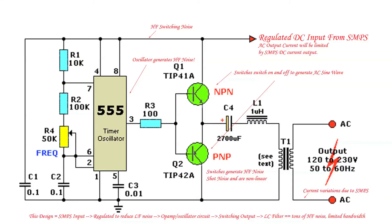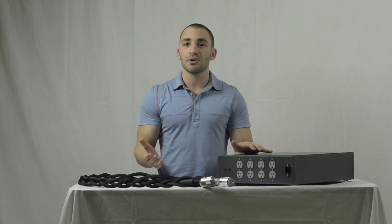With AC regenerators, they're probably the number one source of ground loop noise in any system that I have troubleshot. Generally, they work by using either a linear or switch mode power supply at their input that converts the AC voltage into a DC voltage. That voltage is regulated and then they use an oscillator op amp circuit to regenerate the AC line. The biggest issue is that each of those components actually creates a lot of noise — an oscillator generates a tremendous amount of high frequency noise, and a switch mode power supply is necessary to generate enough current to power an audio system. Units that use linear power supplies have such limited power that you can't use them for more than just a digital front end.